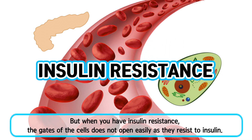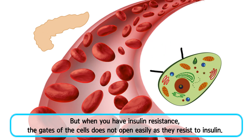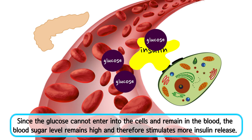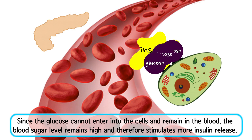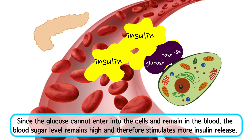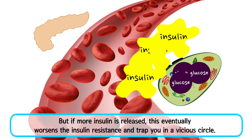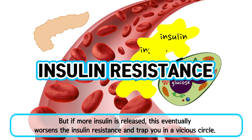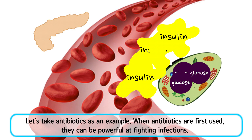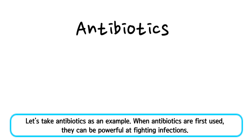But when you have insulin resistance, the gates of the cells do not open easily as they resist insulin. Since the glucose cannot enter into the cells and remains in the blood, the blood sugar level remains high and therefore stimulates more insulin release. But if more insulin is released, this eventually worsens the insulin resistance and traps you in a vicious circle.